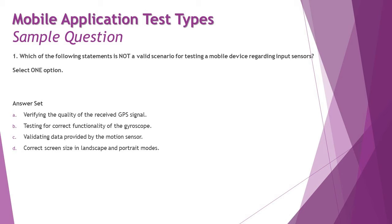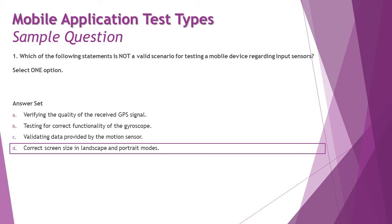That leaves option D — verifying correct screen size in landscape and portrait modes. This relates to orientation testing, not input sensors. Some people think there's a sensor behind the screen that tilts it, but actually it's a small liquid-filled test tube that determines orientation when you tilt your phone — not a sensor per se. So the right answer is D: correct screen size in landscape and portrait modes is not a valid scenario for testing input sensors.